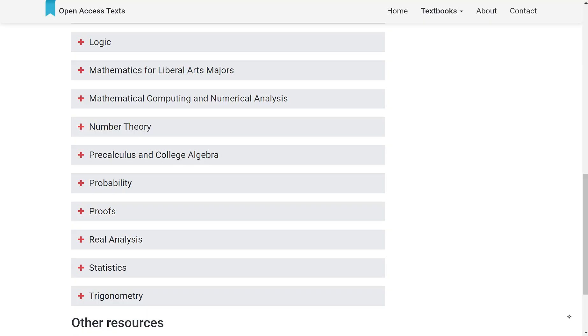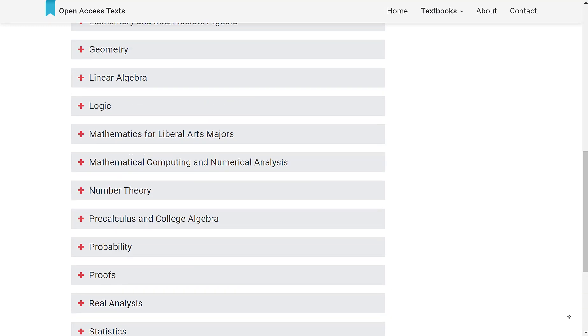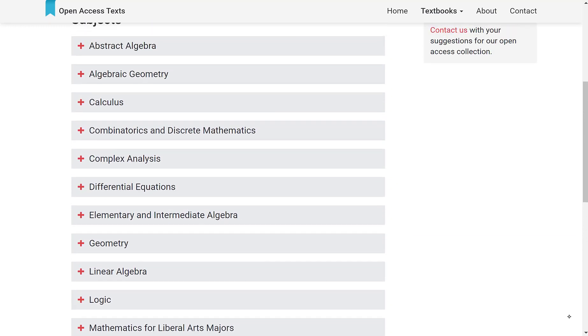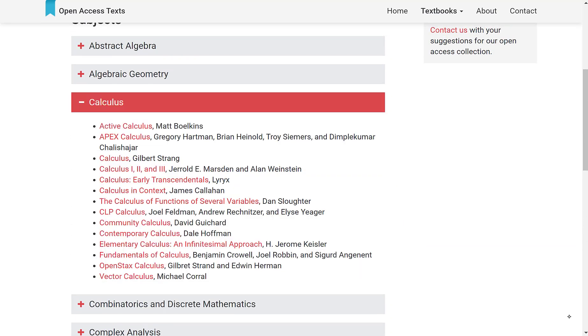So taking a look at Open Access Texts, if I were to approach studying math from the ground up, I would take a look at the collection of calculus books. One of my favorites is the calculus book by Gilbert Strang as well as OpenStax Calculus, but other people might have different preferences and obviously you have quite a few options here.